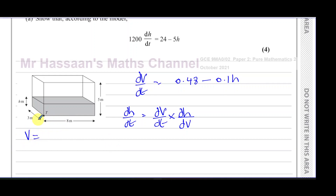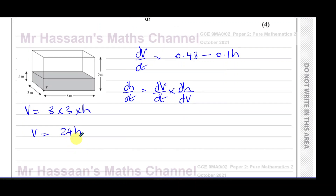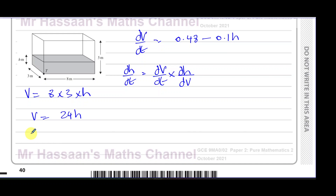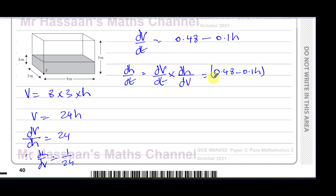Since the tank is a cuboid, the volume is length × width × height = 8 × 3 × h = 24h. So V = 24h, meaning dV/dh = 24, and therefore dh/dV = 1/24. Applying the chain rule: dh/dt = (0.48 − 0.1h) × (1/24), which is (0.48 − 0.1h) over 24.